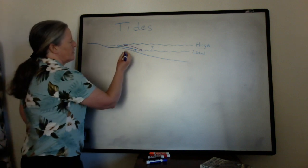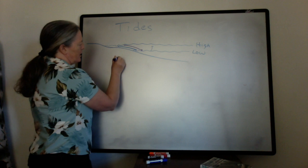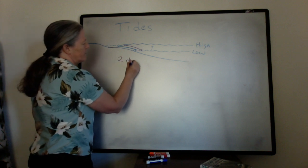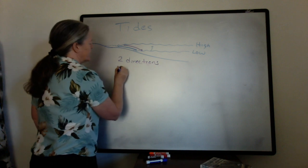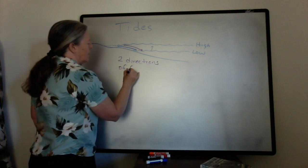So this aspect of tides, the two directions of flow, is very characteristic of tides.